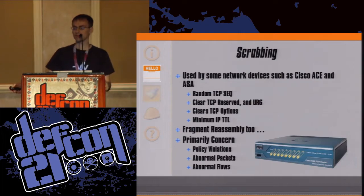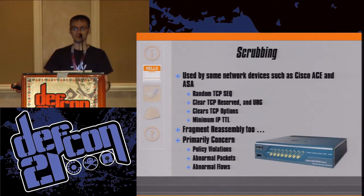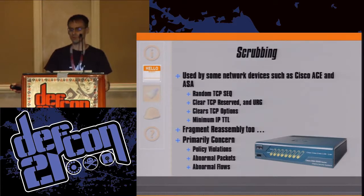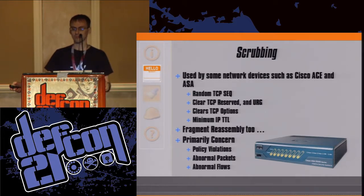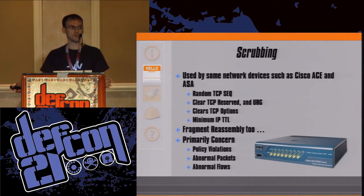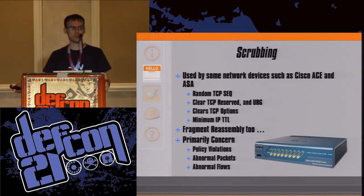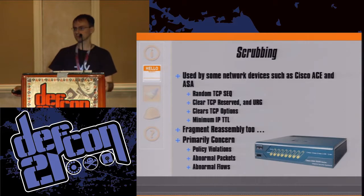There are also networking devices such as the Cisco ACE and Cisco ASA. These add scrubbing options: randomizing the TCP sequence number, clearing the TCP reserve field and URG fields, clearing some TCP options, and enforcing a minimum IP time to live. Also some fragment reassembly. The primary concern is still policy violations, abnormal packets and flows. Once again, not enough normalization, not effective for fingerprinting prevention, nor practical — they're primitive devices lacking the ability to cover the entire network.